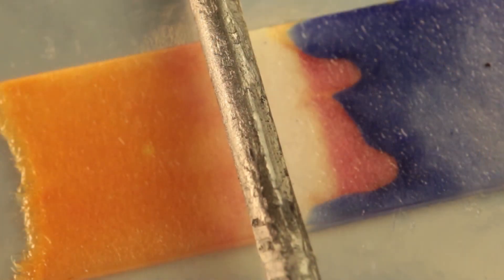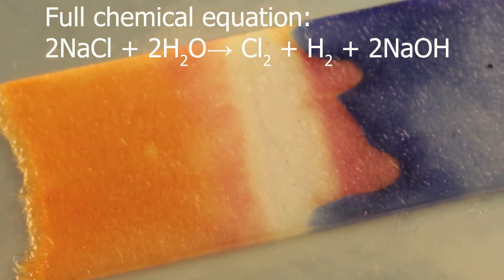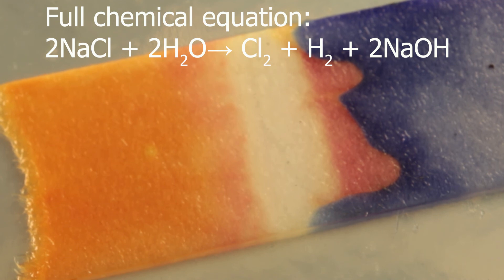Full equation is this. It's equation for chloralkali industry. Industrially, brine is electrolyzed for making sodium hydroxide and chlorine gas, because hydrogen is a byproduct.